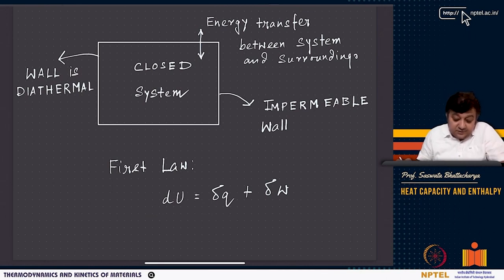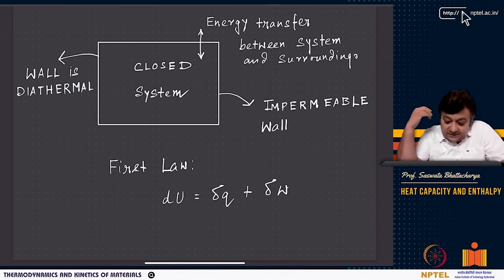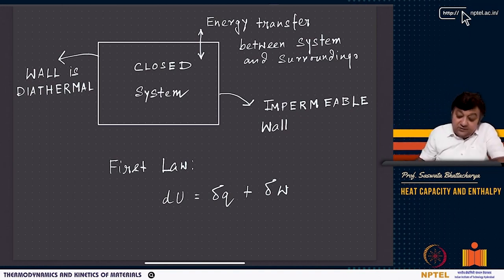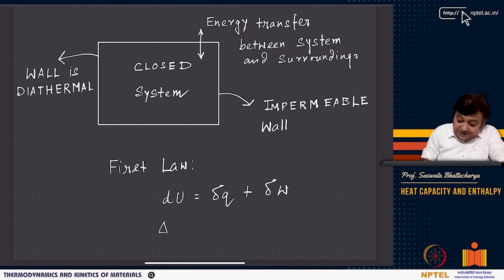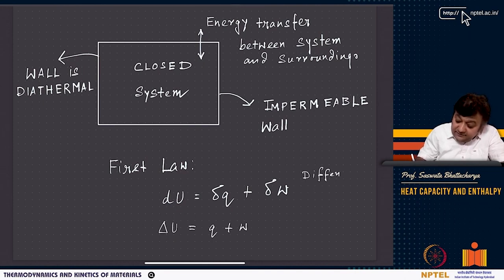Today I will be talking about enthalpy, heat capacities, and the first law. We have already given a statement of the first law in differential form: du equals delta q plus delta w. This can also be written in the integral form as delta u equals q plus w, which is called the integral form.